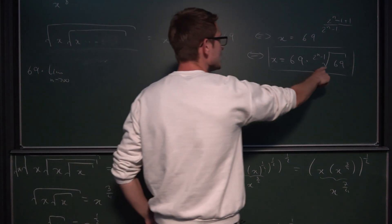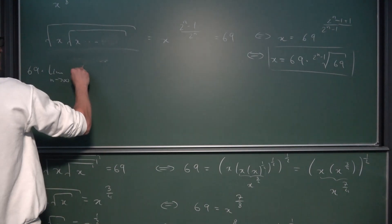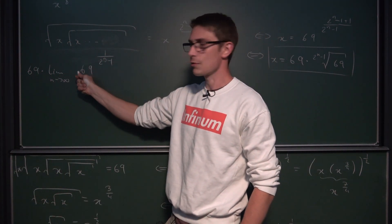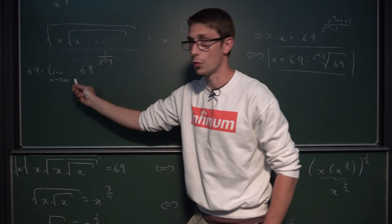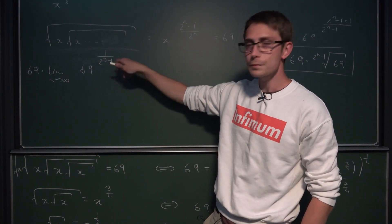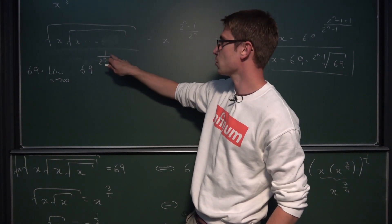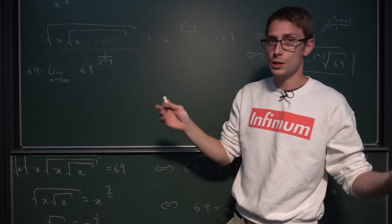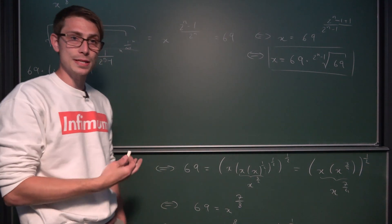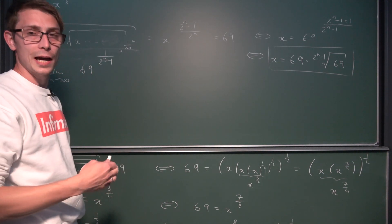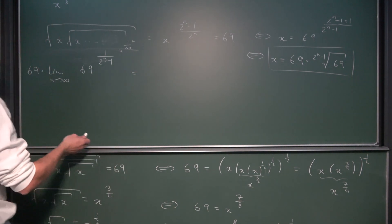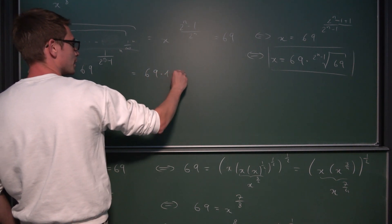We rewrite the limit term as 69 to the 1 divided by (2^n − 1). This is essentially the exponential function, which is continuous, so we can drag the limit to the exponent. Taking the limit as n approaches infinity, we get 1 over positive infinity minus 1, which is still positive infinity. So this term in the exponent is basically 1 over positive infinity, which in the limit is the same as 0. And what is 69 to the 0th power? By definition, it's 1.